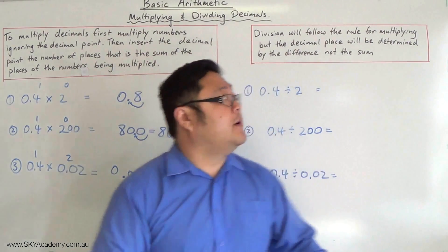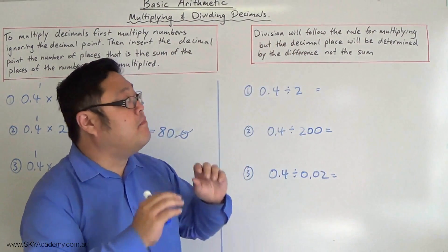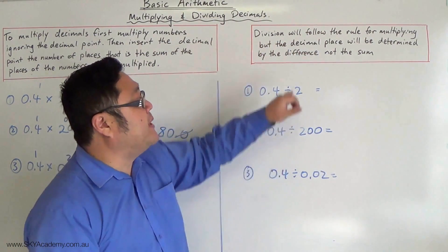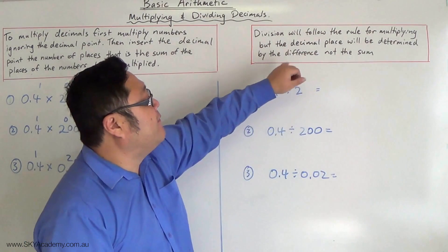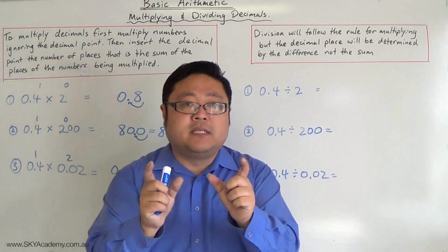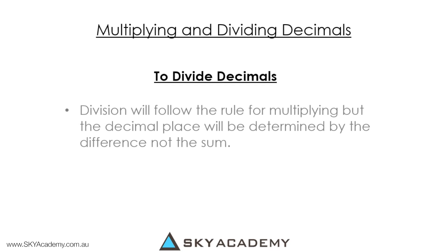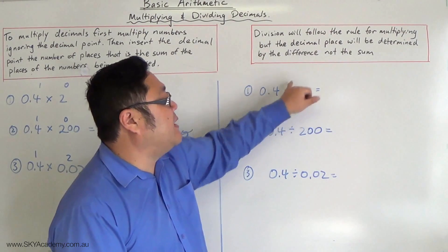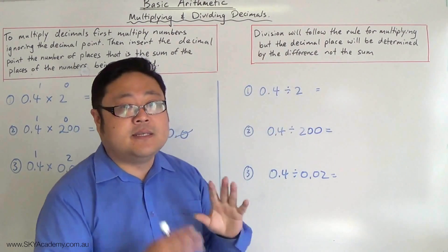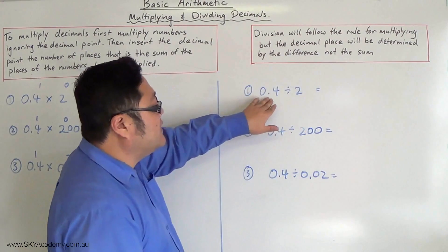Now let's look at the division of decimals. Division follows a similar approach to multiplication, but instead of finding the sum of the decimal places, you work out the difference between the number of decimal places in the first number and the number of decimal places in the second number.